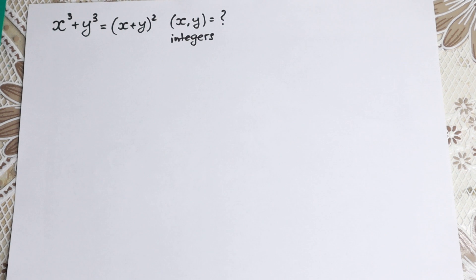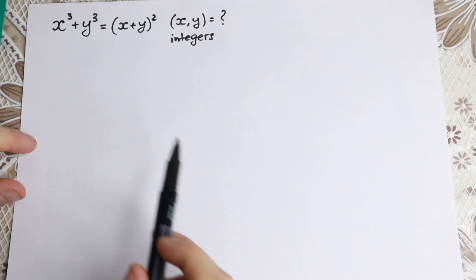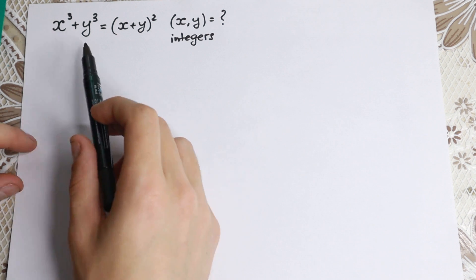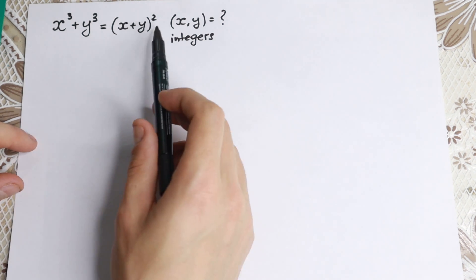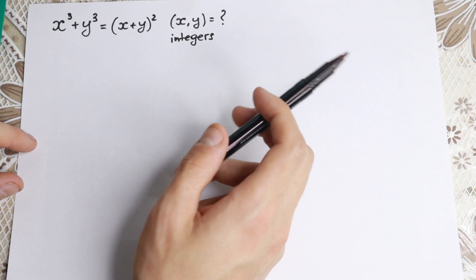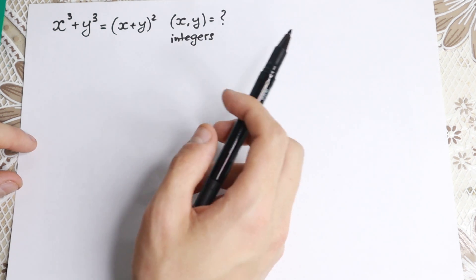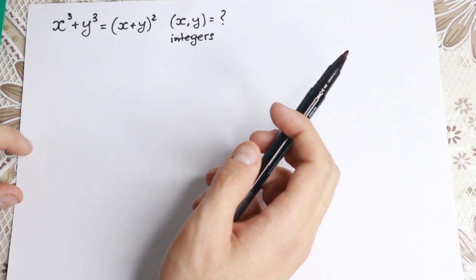Hello everyone! Welcome back to Higher Mathematics! Happy to see you here! Really interesting algebra problem today. We have x³ plus y³ equal to (x plus y)², and we need to find our integer pairs of solution x and y. How can you do this?